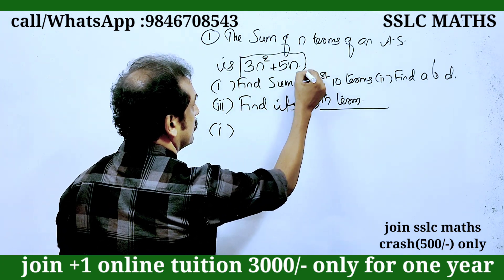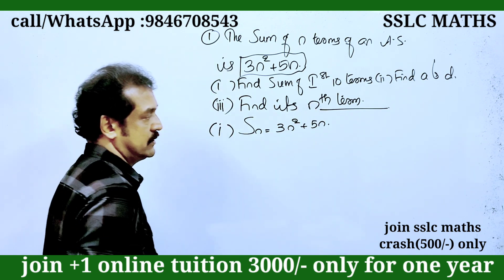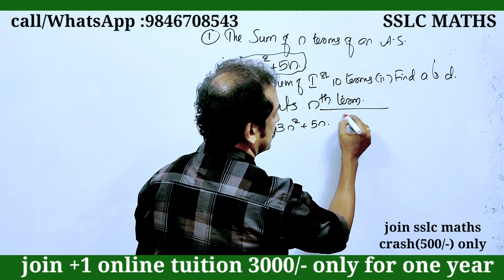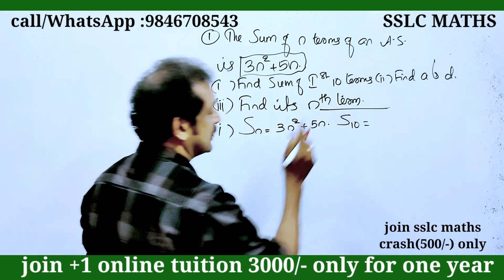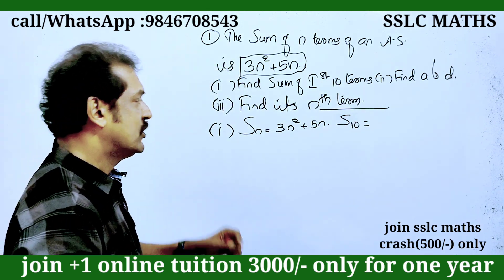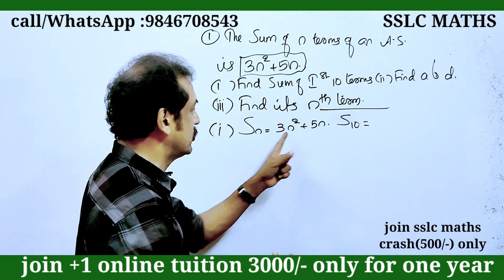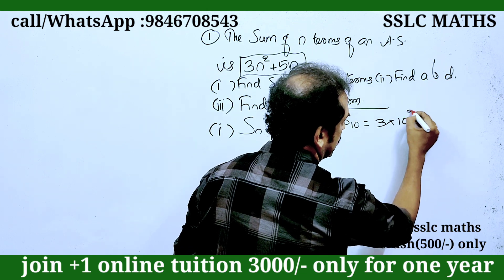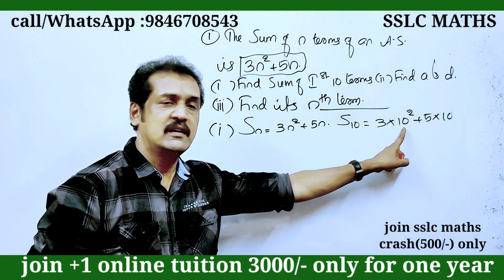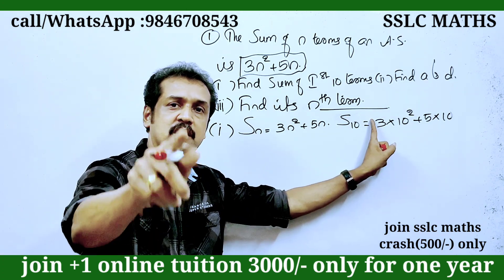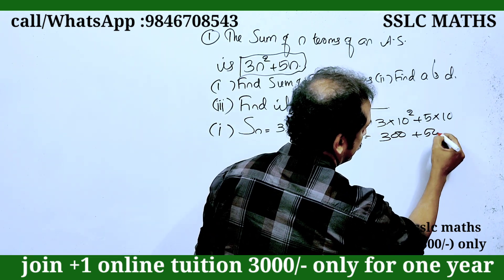Let's do the n² environment. This is the sum of the 10 times. So n squared is 10. One way: 3 into n squared plus 5 into n. That is 3 into 10 squared plus 5 into 10. 10 squared is 100. 100 into 3 is 300. 5 into 10 is 50. The answer is 350.